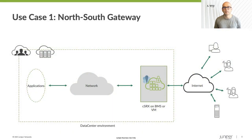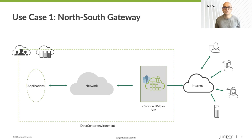I will begin with a generic firewall use case — that of a north-south firewall that finds application in data center environments, wherever they may reside. It could be the public cloud or an on-prem data center, with the ability to be deployed in either a virtual machine or a bare metal server with DPDK functionality. The CSRX is able to protect applications and other workloads residing in the data center environment, leveraging the functionality of next-generation firewalls with IDP, application, and content security, all in a container form factor.